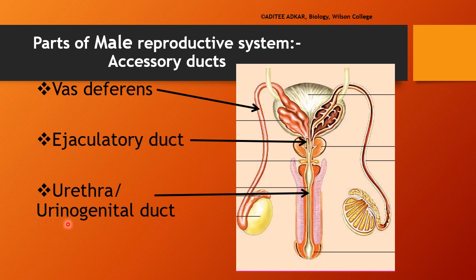Hence, it is also known as the urinogenital duct — urino because it is part of the excretory system transporting urine, and genital because it is a duct of the reproductive system transporting sperms as well. The urinogenital duct or urethra opens at the tip of the penis, and this opening is known as the urethral orifice.